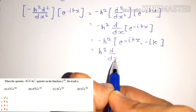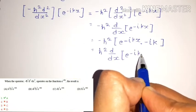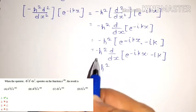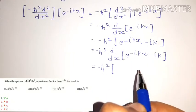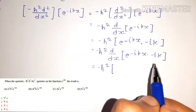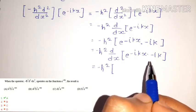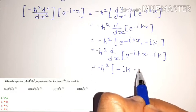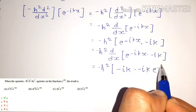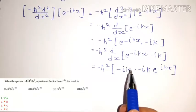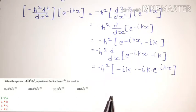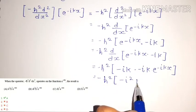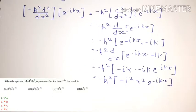Now do the second differentiation of the first differentiation result. We have minus ℏ² d/dx of [e^(-ikx) · (−ik)]. Differentiating: keep one term constant and differentiate the other. This gives minus ℏ² into (−ik)(−ik) · e^(-ikx), which equals minus ℏ² into (−i²k²) · e^(-ikx).